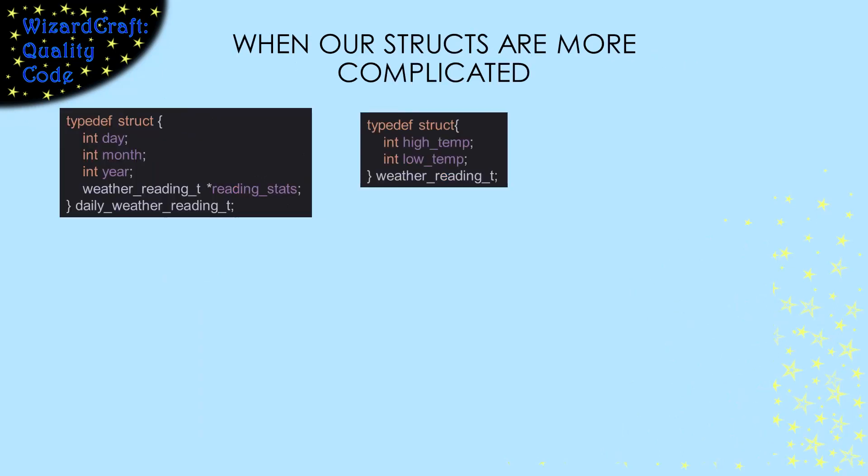Another source of memory leaks is complicated data structures. Suppose we have a struct that includes a pointer to another struct. In this case, I've made a daily weather reading struct that contains a date and a pointer to a weather reading for that day.